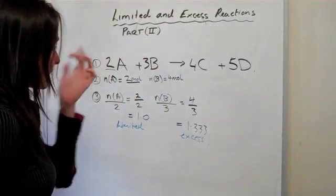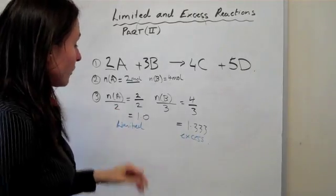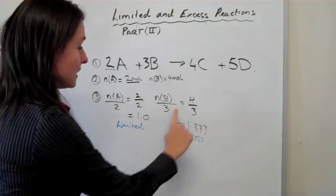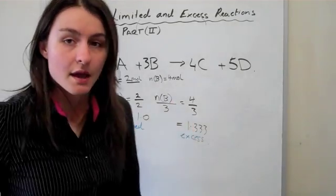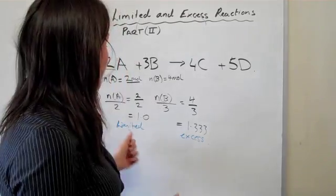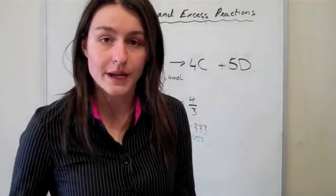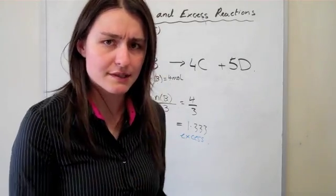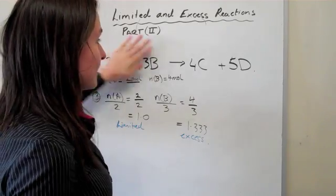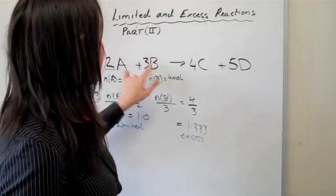So let's have a look at this particular question. We've already figured out in the previous video that A is limited and that B is excess. Now that has a very significant meaning, it means that basically A is going to control the reaction because once A runs out, B cannot convert by itself into C and D, it needs A to be there.